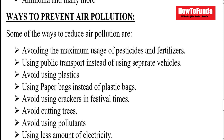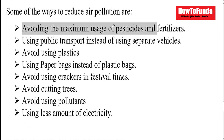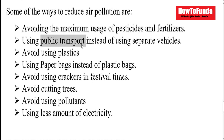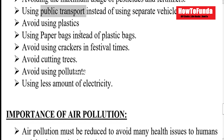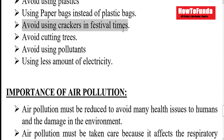How can we prevent air pollution? Air pollution can be reduced by performing various activities like avoiding maximum utilization of pesticides and fertilizers — we should minimize their use as much as possible. We should also make use of public transportation rather than individual vehicles, as that will also reduce air pollution. As much as possible, we should avoid plastic bags to reduce air pollution. And during Diwali and other festival times, you should stop using and bursting crackers.